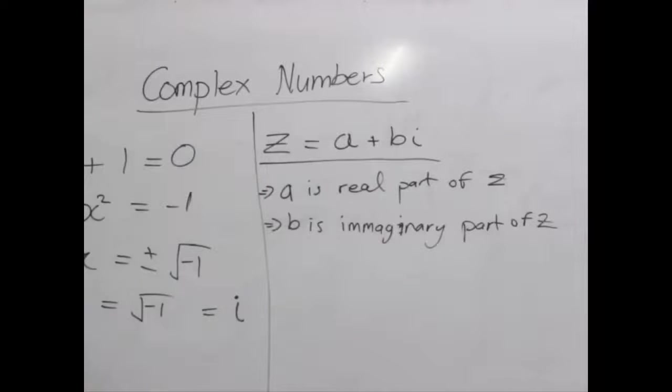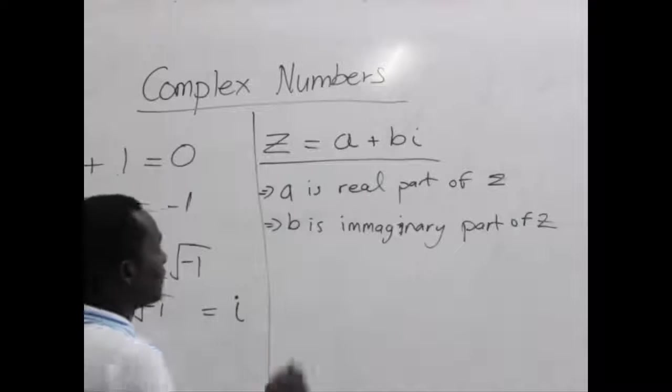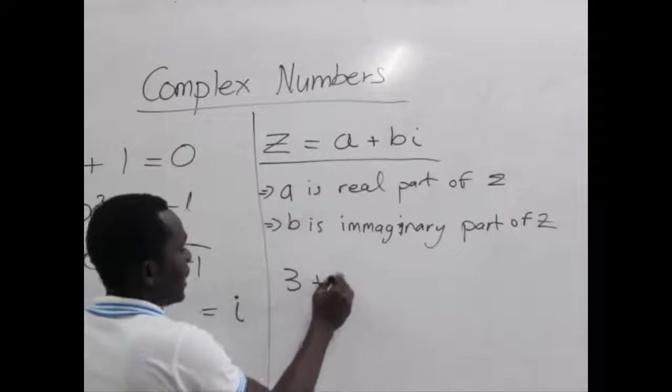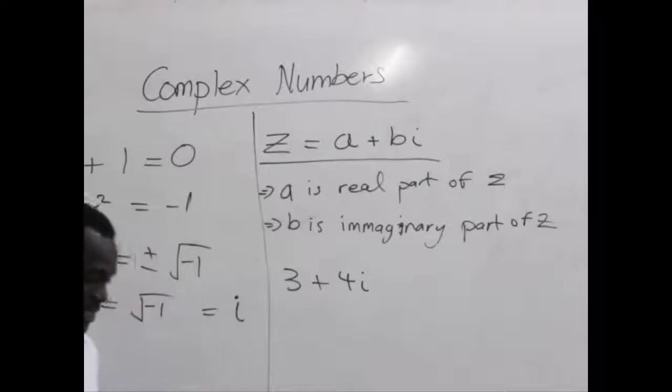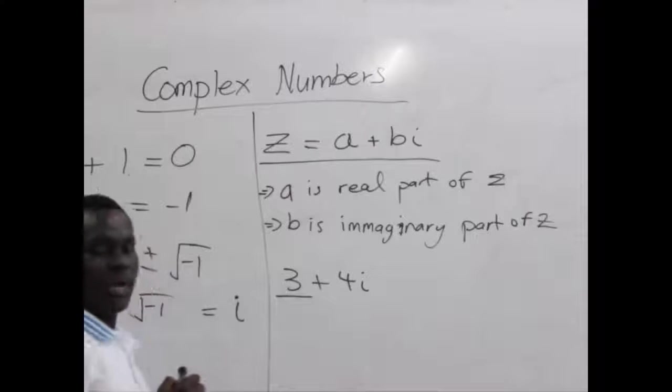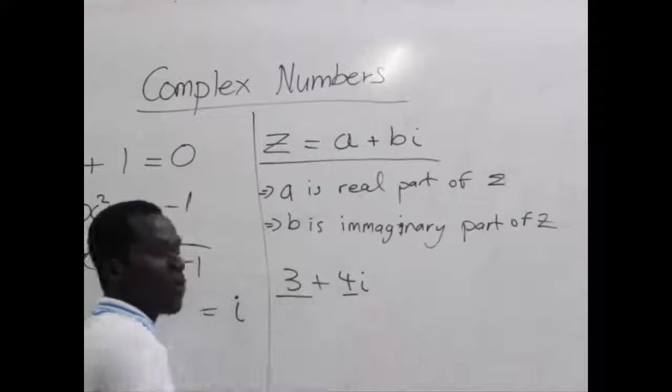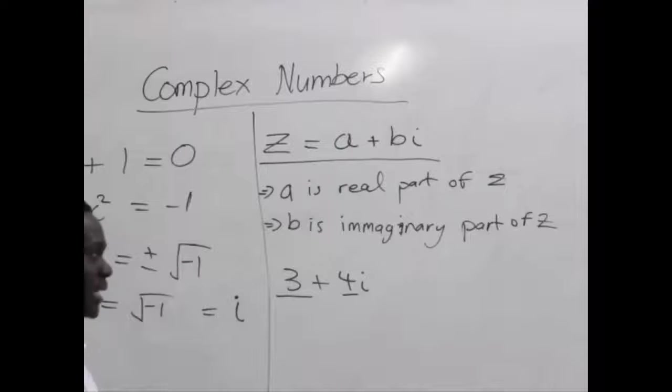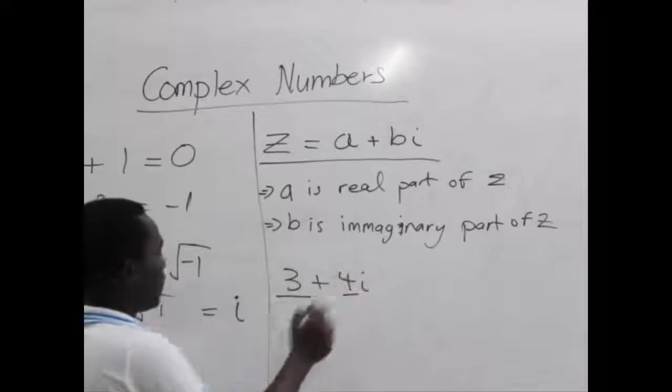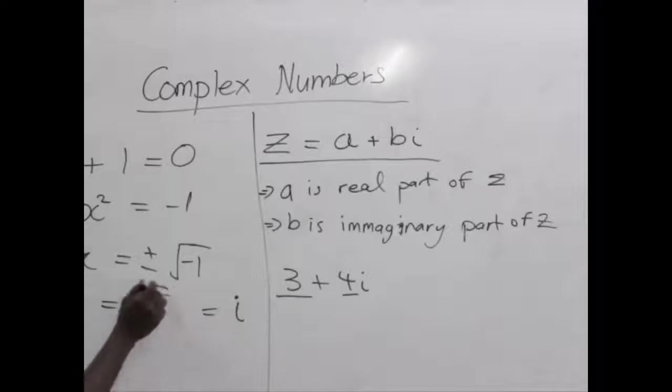Let's talk about examples of complex numbers. Let's take an example. We can have 3 + 4i is a complex number. 3 is the real part and the 4 is the imaginary part. Don't forget, the value for the i is the root of negative 1.